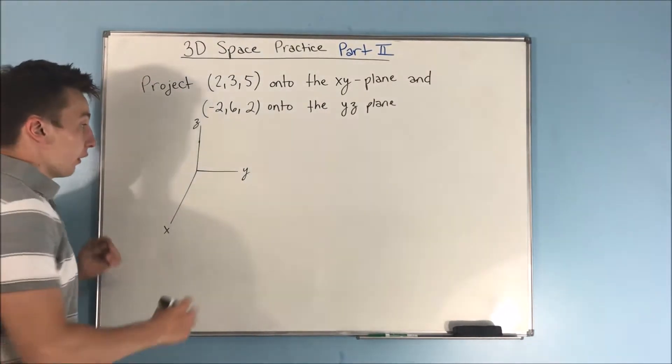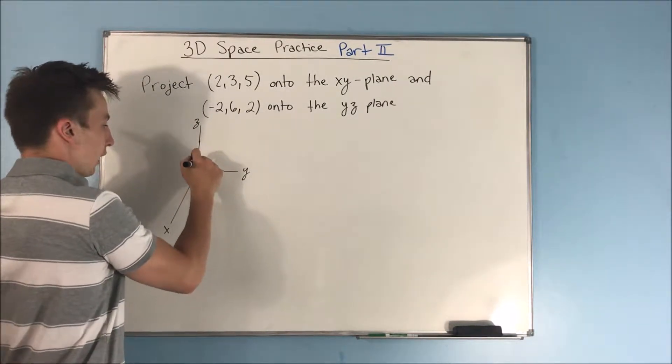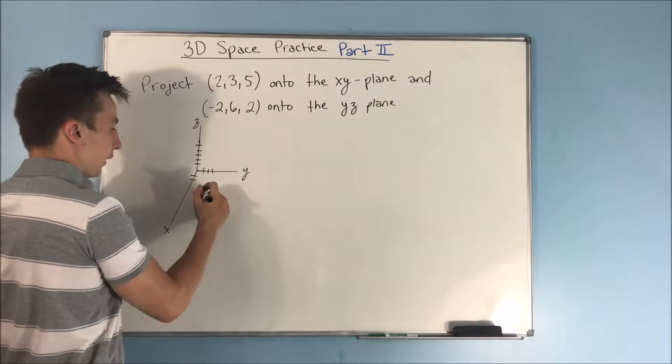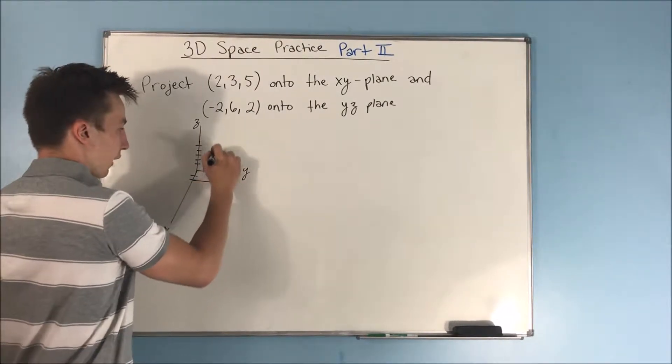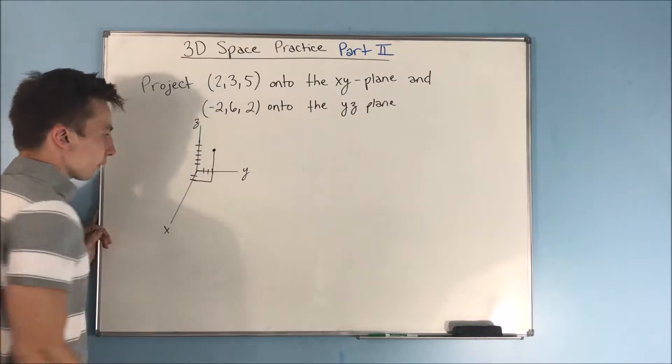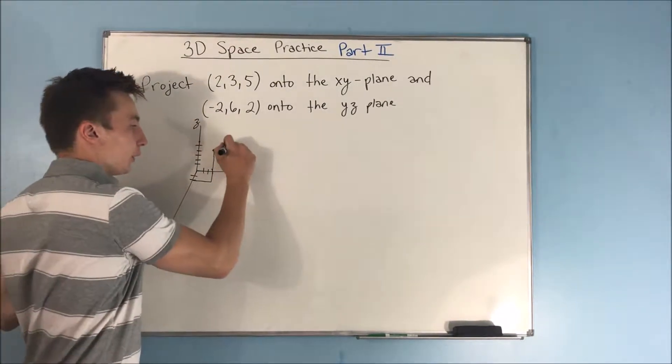And let's draw that (2,3,5). Going 2 in the X direction, 3 in the Y direction, and then 5 in the Z direction. So this is going to look like 2, 3, and then 5. So this is our point (2,3,5).